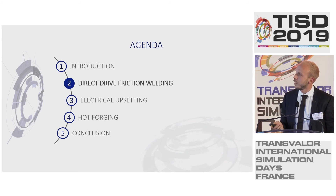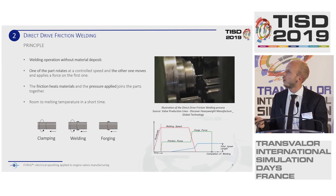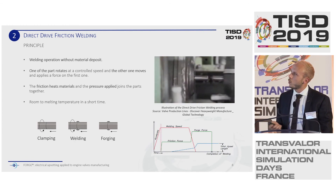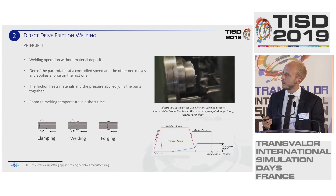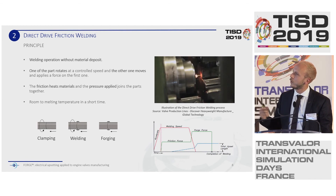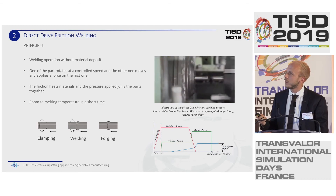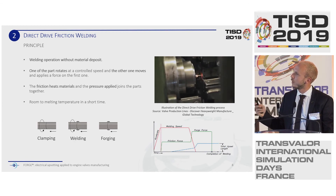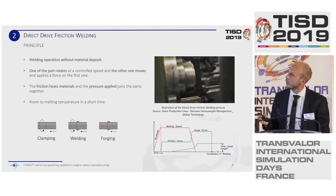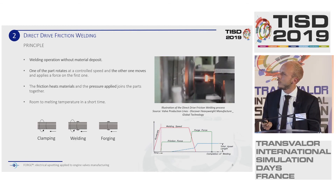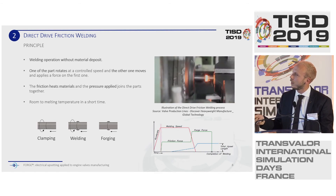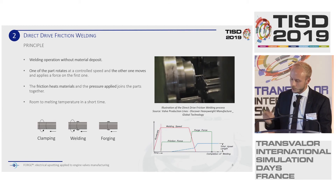The first operation is direct drive friction welding. This is a welding operation without material deposits. One part rotates at a controlled speed while the other moves and applies a force on it. The friction heats the materials and the applied pressure joins the parts together. In a very short time, the temperature increases from room temperature to 1600 degrees. There are three main phases: the initialization of rotation and clamping, then welding, and finally forging of the part.